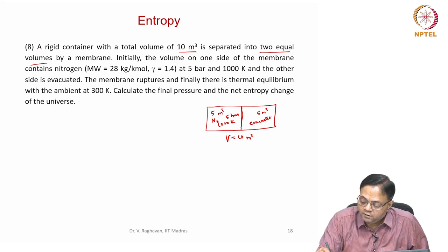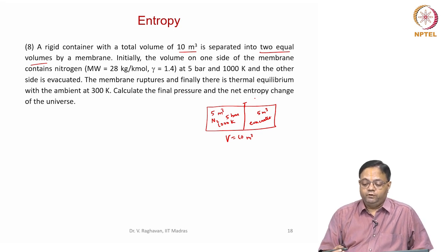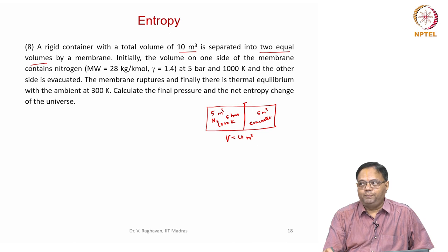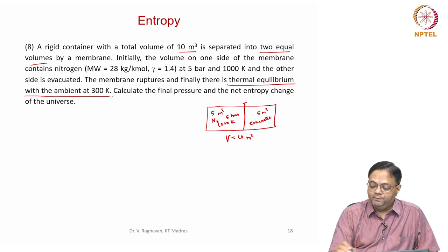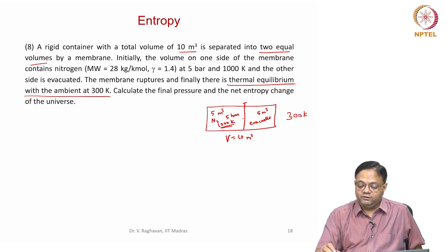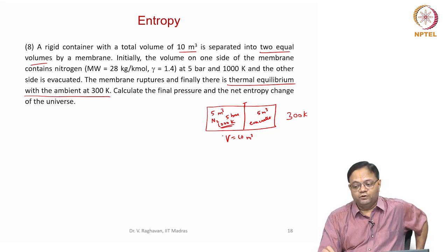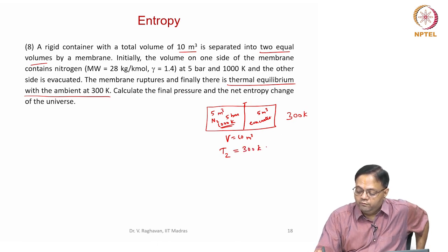The membrane is a thin membrane like aluminum foil, and we can rupture it. Once the aluminum foil is ruptured, there is a rapid expansion of the nitrogen from the left side to the entire volume. The membrane ruptures and finally there is thermal equilibrium with the ambient. The ambient temperature is 300 Kelvin — from 1000 Kelvin there is heat transfer, meaning the rigid container is not insulated. Finally, T2 equals 300 Kelvin, equal to T ambient.